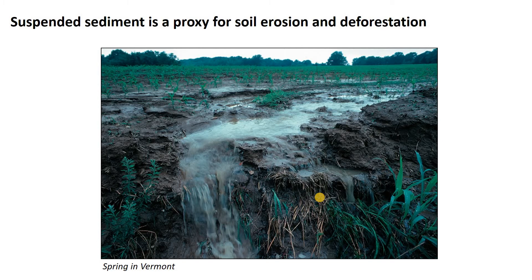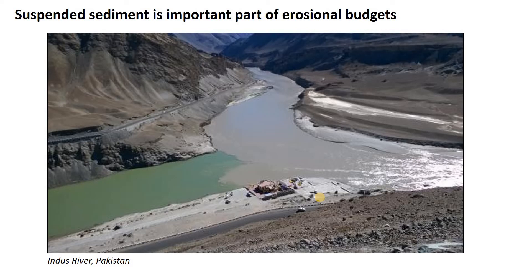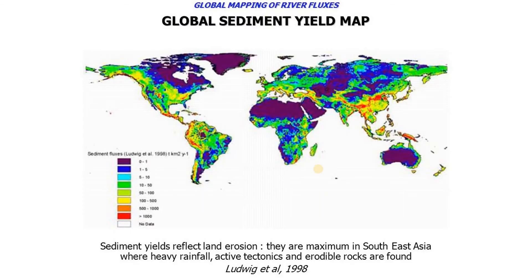Suspended sediment can also be a proxy for soil erosion and deforestation. If you follow suspended sediment, it may lead you back to poor practices like deforestation and soil erosion. And then from a broader landscape perspective, suspended sediment is a fundamental way in which mountains are carried to the sea — this is part of the rock cycle. So if we study tectonic or fluvial geomorphology, we care a lot about how much sediment is moving down rivers, even to the point where people have done global estimates of sediment yield.